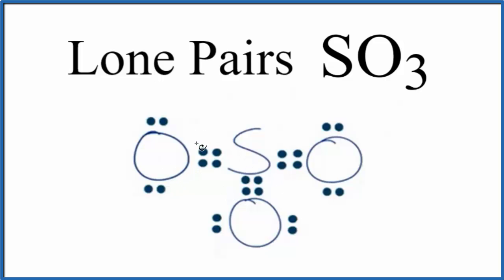We have an octet on each oxygen. Sulfur has 12 valence electrons, but sulfur is an exception. It can have an expanded octet. So we have a Lewis structure for SO3.